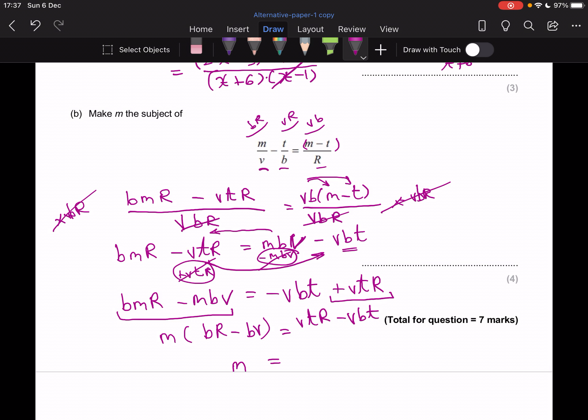And all I have to do is divide by the bracket. So M is going to be equal to VTR minus VBT over BR minus BV. And there you go. I'm done. I'm doing 19 and 20 shortly. So see you soon. Bye.